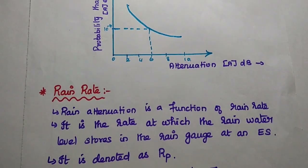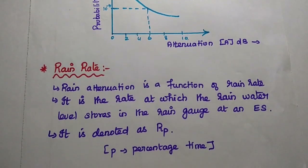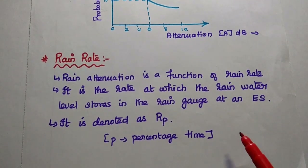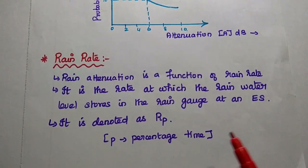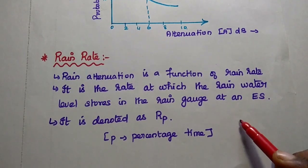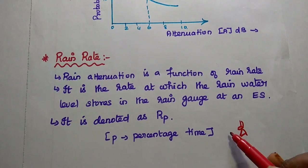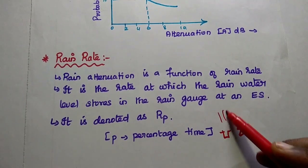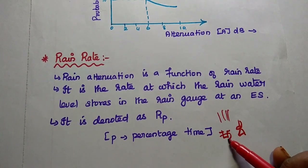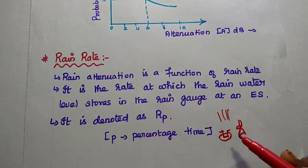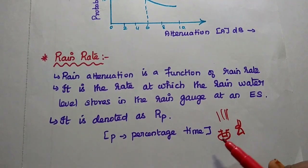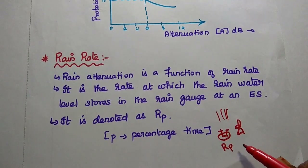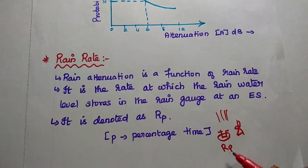The next concept is rain rate. Rain attenuation is a function of rain rate — it is the rate at which the rain water level stores in the rain catch at the earth station. An open rain catch is placed in the earth station area, and whatever level is stored in this rain catch during rainfall is represented as the rain rate, denoted as RP. It is very important to analyze the rain attenuation in both the uplink and downlink processes.